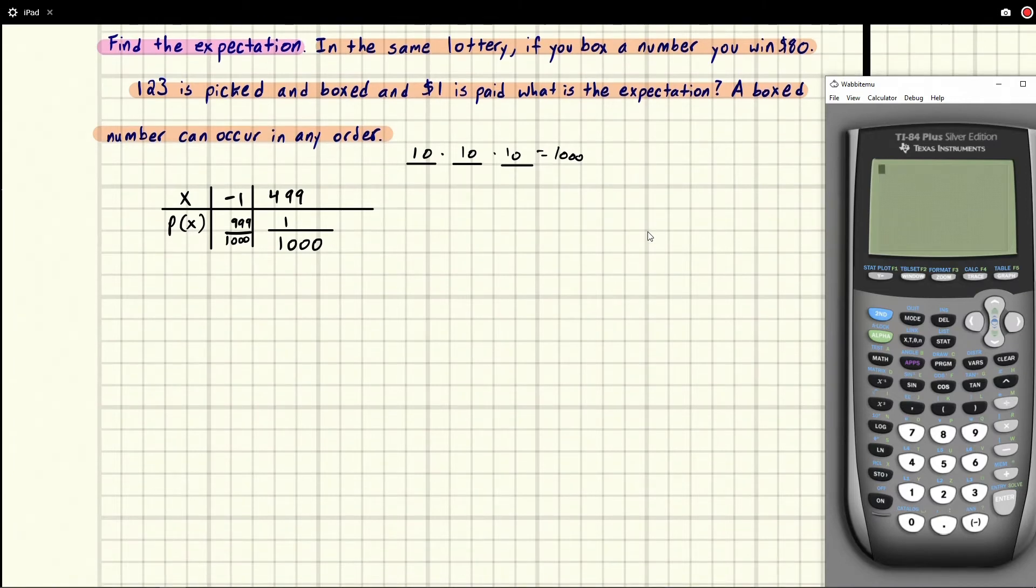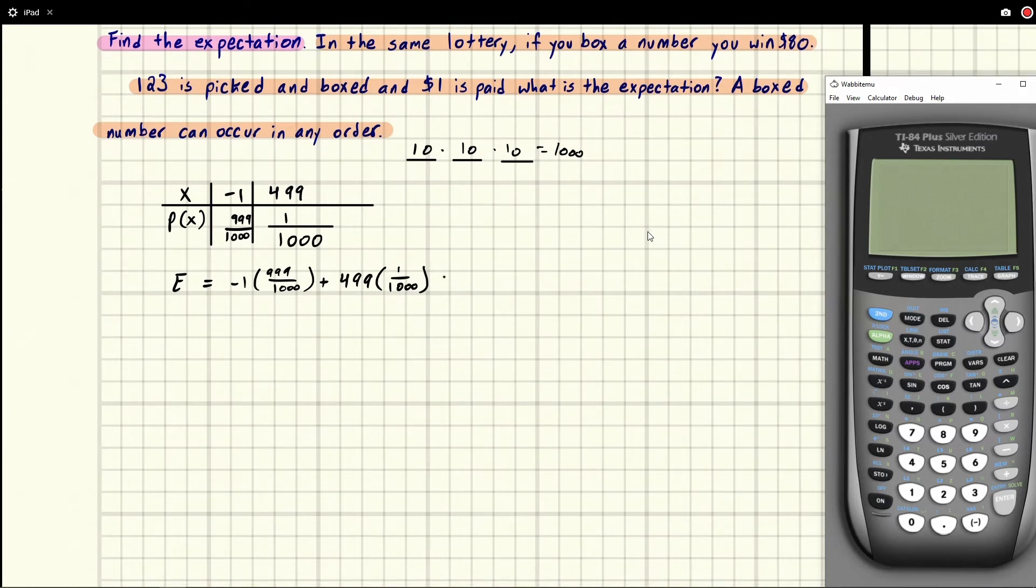So if we want to find the expected value, that's going to equal the probability times the event, just like the mean does. So we're going to do -1 times 999 over 1000 plus 499 times one over 1000. This is the same formula as the mean.